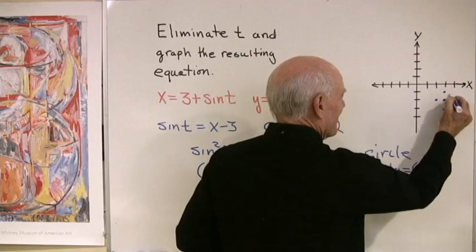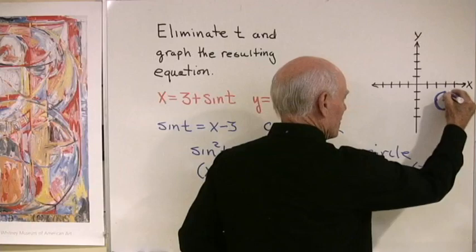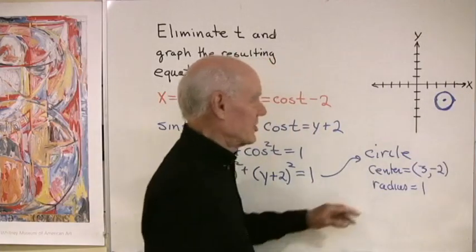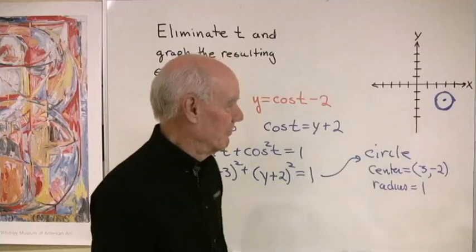This isn't drawn to scale by any means, but that's approximately what that circle will look like. It's got a center at the point x equal 3, y equal negative 2, and it has a radius of 1.